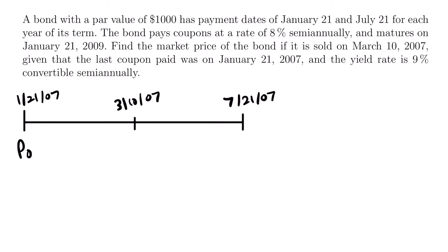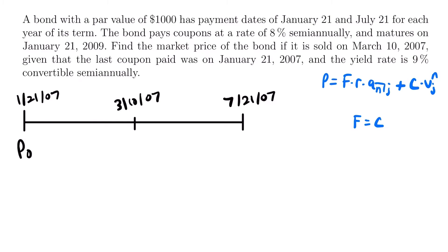We're going to use our formula for the price of a bond: the price equals the face value times the coupon rate times a-angle-n at j, where j is the yield rate, plus the redemption value times the present value factor to the power of n using yield rate j. For the bond in this problem, the par value is $1,000, so face value F equals redemption value C equals $1,000, since our problem doesn't state anything else about the redemption value.